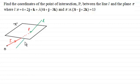I've got an example here where we've got to find the coordinates of the point of intersection P between the line L and the plane π, where L is given as the position vector R equals i plus 2j plus k plus λ times 4i plus j minus 3k, and the plane π is given by R dot 3i minus j plus 2k equals 13.